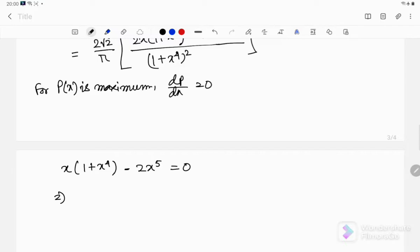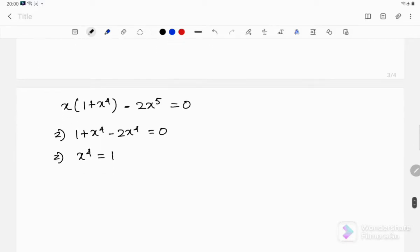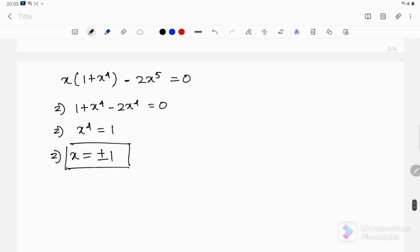So we can divide this equation by x. Note I have mentioned that x is not equal to 0. If we do that, we get x(1+x⁴) - 2x⁵ = 0, which gives us x⁴ = 1, and that gives us x = ±1. So these are the values, plus minus 1.